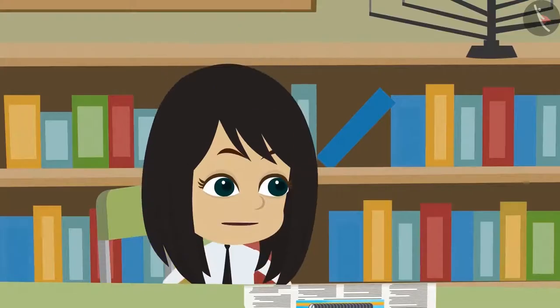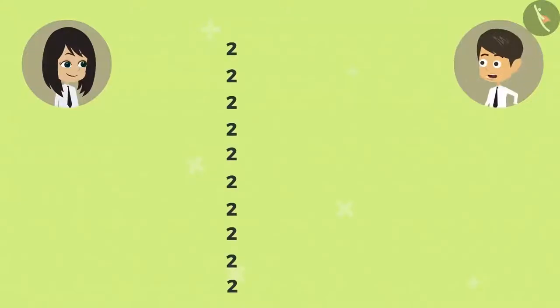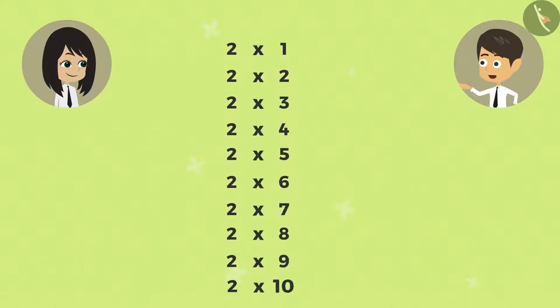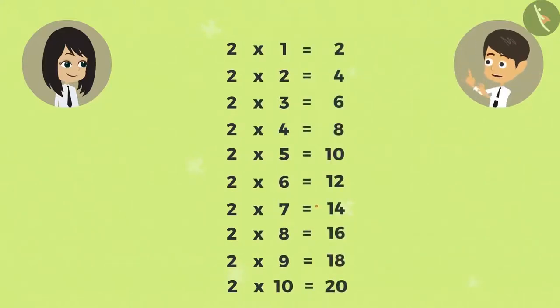The multiplication table of two. What is a multiplication table? The list obtained when multiplying a number with 1 to 10 is called the multiplication table of that number.